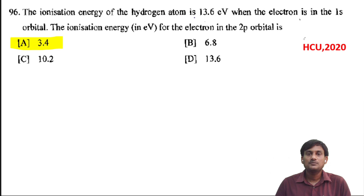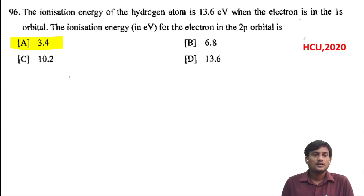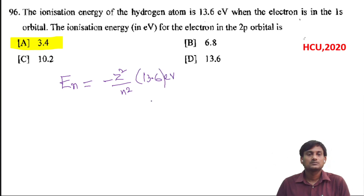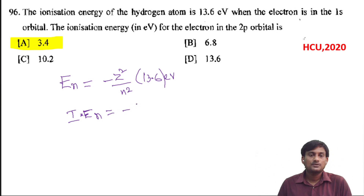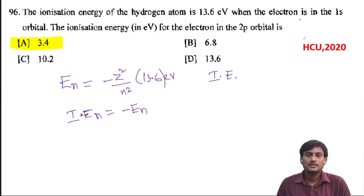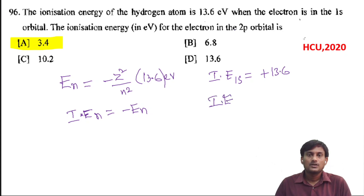The ionization energy of the hydrogen atom is 13.6 electron volt when the electron is in the 1s orbital. The ionization energy for the electron in the 2p orbital is? The energy En equals minus Z² by n² into 13.6 eV. The ionization energy of the nth state is negative of the energy of that state.